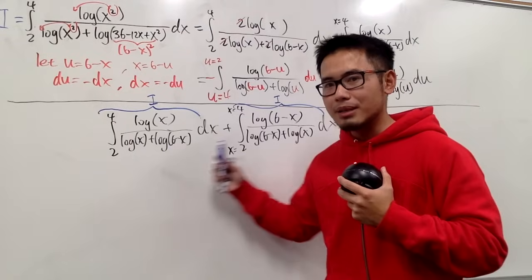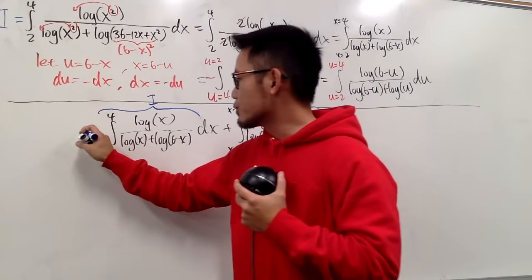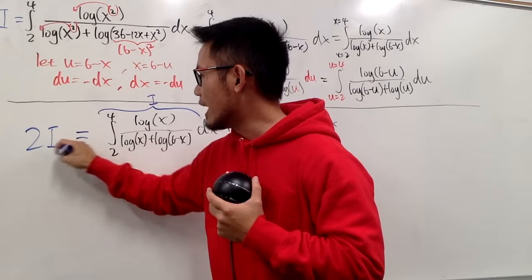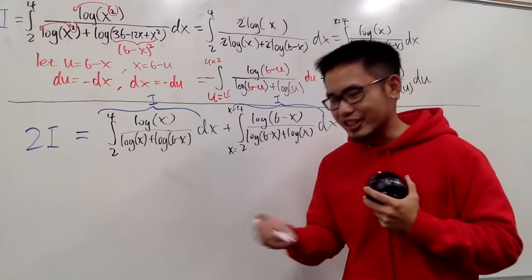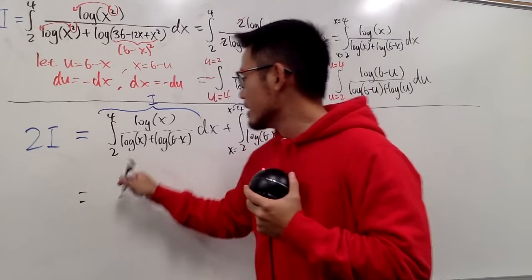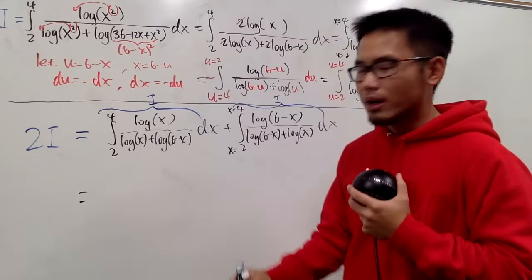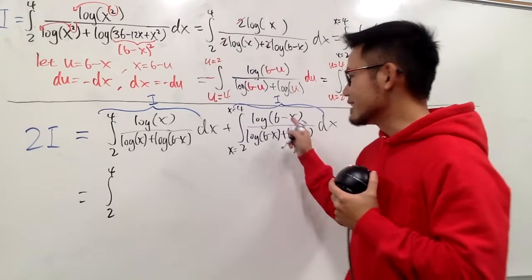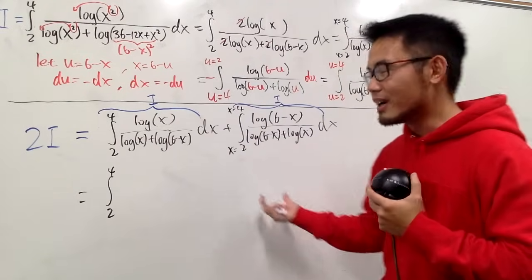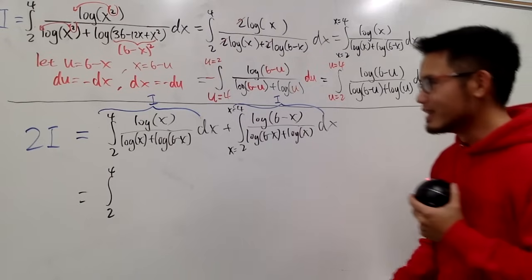So what we're doing is that we are just doing I plus I. So keep track of the I. We have a total of 2I right here. Now here is the magic. You see, they have both from 2 to 4. So of course we can just put this down, this is 2 to 4. And then this plus that happens to be on the denominator as well. That's why I talked about it earlier. So I will just show you guys the work.